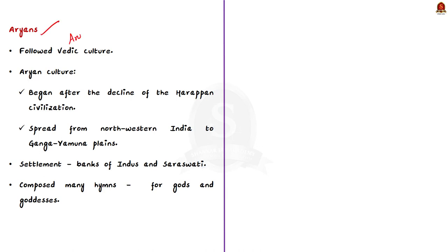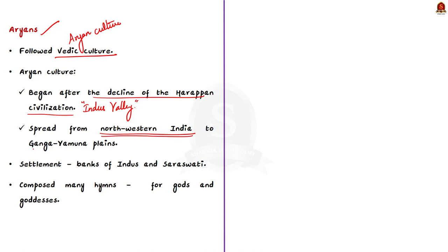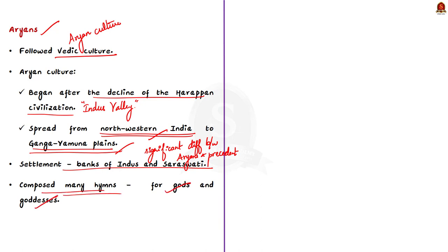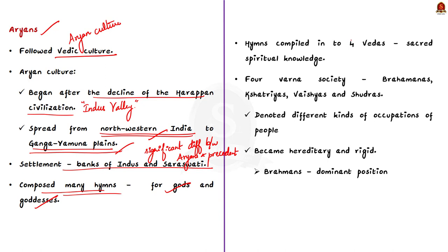Aryans follow Aryan culture, also called Vedic culture. Aryan culture began a few centuries after the decline of the Harappan civilization, that is the Indus Valley civilization. It began in the north-western part of the Indian subcontinent and gradually spread across the Ganga-Yamuna plains. Aryans settled on the banks of rivers Indus and Saraswati - note that river Saraswati is now non-existent. Aryans composed many hymns in honour of the gods and goddesses they worshipped, compiled into four Vedas: Rigveda, Samaveda, Yajurveda, and Atharvaveda. This is why this culture is also known as Vedic culture.